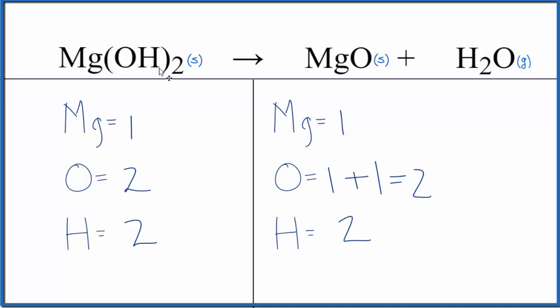So we'll end up with a solid, Mg(OH)2, magnesium hydroxide. Magnesium oxide will be a solid. And water, because it's hot, it'll be a gas. Could condense later, but let's stick with the gas here.